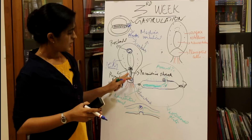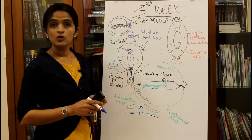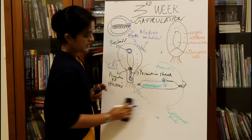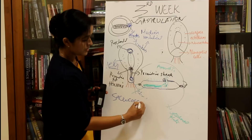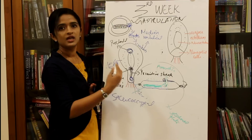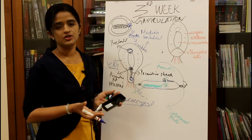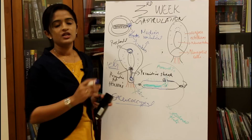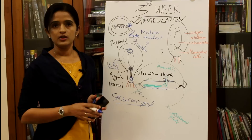By the end of the fourth week, the primitive streak usually disappears. However, if it persists in the newborn, that condition is called sacrococcygeal teratoma — a large tumor seen towards the sacrum and coccyx region because the primitive streak forms at the tail end. The tumor is benign; as the name implies, it contains derivatives of all three germ layers. It is usually seen in female newborns and has a very good prognosis.